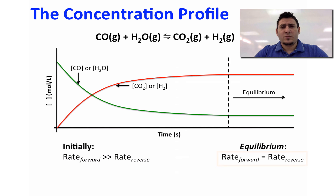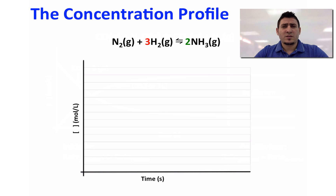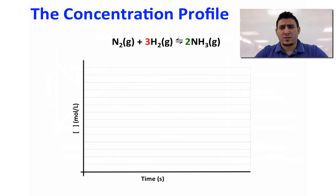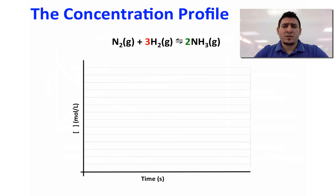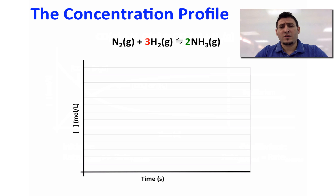This is when the rate of the forward reaction is equal to the rate of the reverse reaction. Now I would like to discuss a method on how to draw the concentration profile of any reaction. In this example I'm taking the Haber process, which is the reaction between nitrogen and hydrogen to give ammonia. Assuming that we know the initial concentrations and also the equilibrium concentrations.